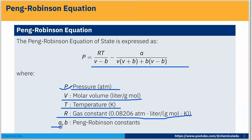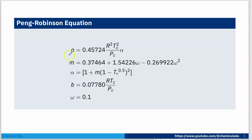The Peng-Robinson constants are: A = 0.45724(R²Tc²/Pc)·alpha, where alpha = [1 + M(1 - Tr^0.5)]², and M = 0.37464 + 1.54226·omega - 0.269922·omega². Also, B = 0.07780·R·Tc/Pc, and omega = 0.1. These equations are given, and we need to calculate them one by one.